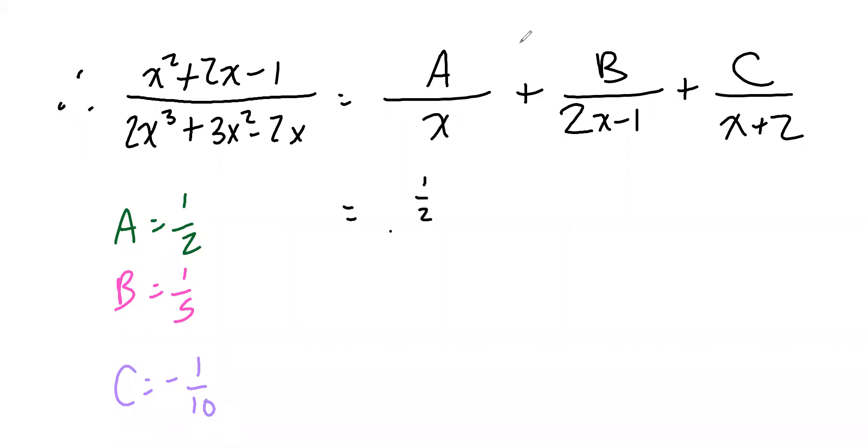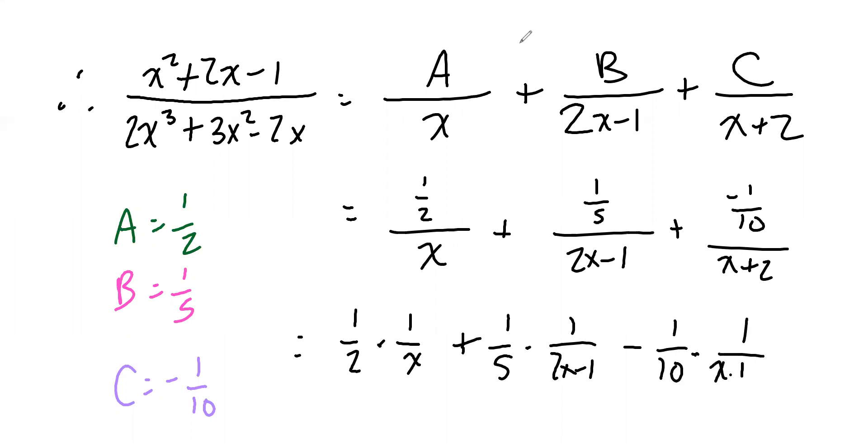A is one-half, so we have one-half over X. B is one-fifth, so we have one-fifth over 2X minus 1. And C is negative one-tenth over X plus 2. Now, there is a cleaner way to write this. We could write one-half times one over X plus one-fifth times one over 2X minus 1, then minus one-tenth times one over X plus 2. They're equivalent, but in anticipation of integrating, I think the bottom line looks better than the middle line.